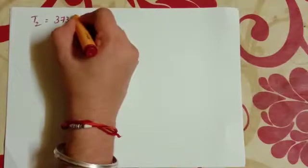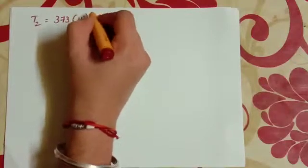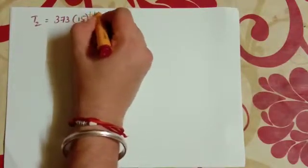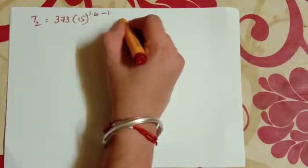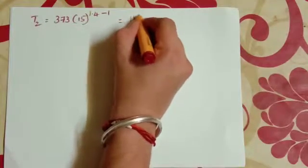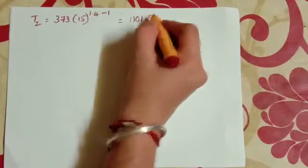373 into 15 raise to 1.4 minus 1, that is equal to 1101.9 Kelvin.